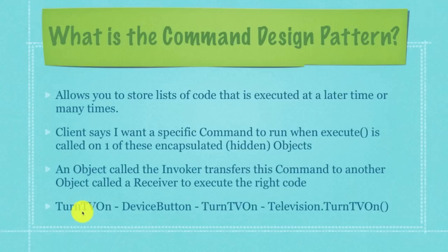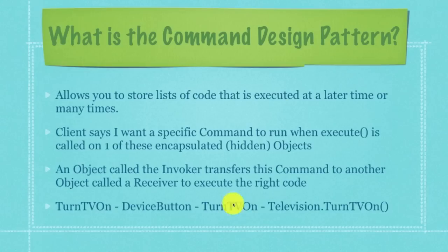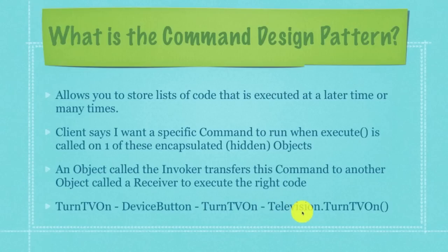So basically, if we have an object called turn TV on, this is actually a command. This command is defined, then device button — which is another class or object — whenever it is called, sends turn TV on. There are going to be interfaces between all this so we can use polymorphism. Whenever turn TV on is called, that method will then be executed by the receiver — television — another object.